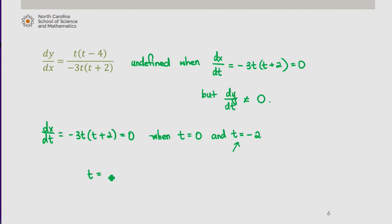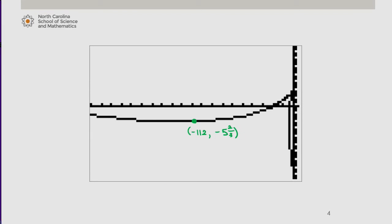t = -2 gives us the point, the coordinate (-4, -5⅔). Let's take a look at this on our graph. We have a vertical tangent line at the point we just found when t was -2. That corresponded to (-4, -5⅔). And we see that our graph confirms that. This was when t was 4 and this is when t was -2.